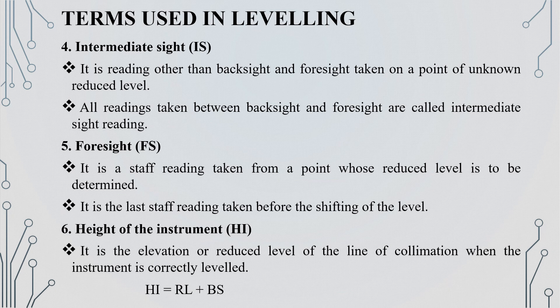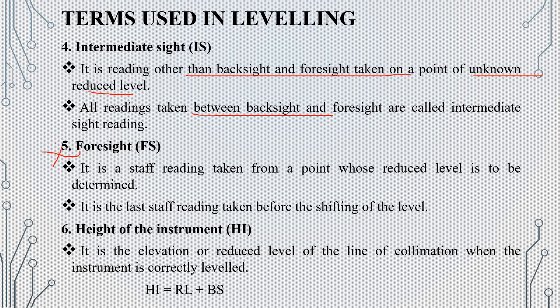The next term is Intermediate Sight. It is the staff reading other than backsight and foresight, taken on a point of unknown reduced level. It is the reading taken from a point whose reduced level is to be determined.